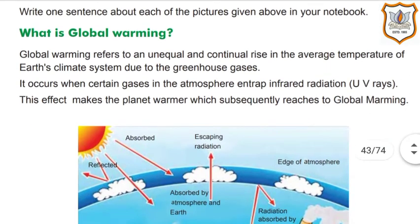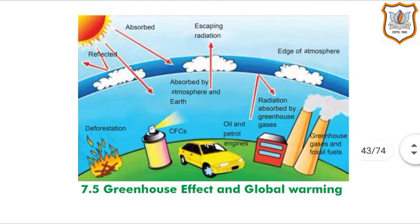What is global warming? Global warming refers to an unequal and continual rise in the average temperature of Earth's climate system due to greenhouse gases. It occurs when certain gases in the atmosphere trap infrared radiation (UV rays). This effect makes the planet warmer, which subsequently leads to global warming. See the picture of the greenhouse effect and global warming given in your textbook.